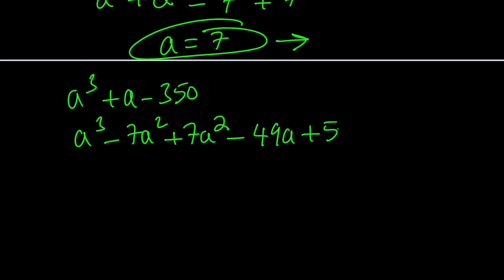Then we need 50a. Why? Because we have an existing a, which is 1a in our equation. And finally, minus 350.